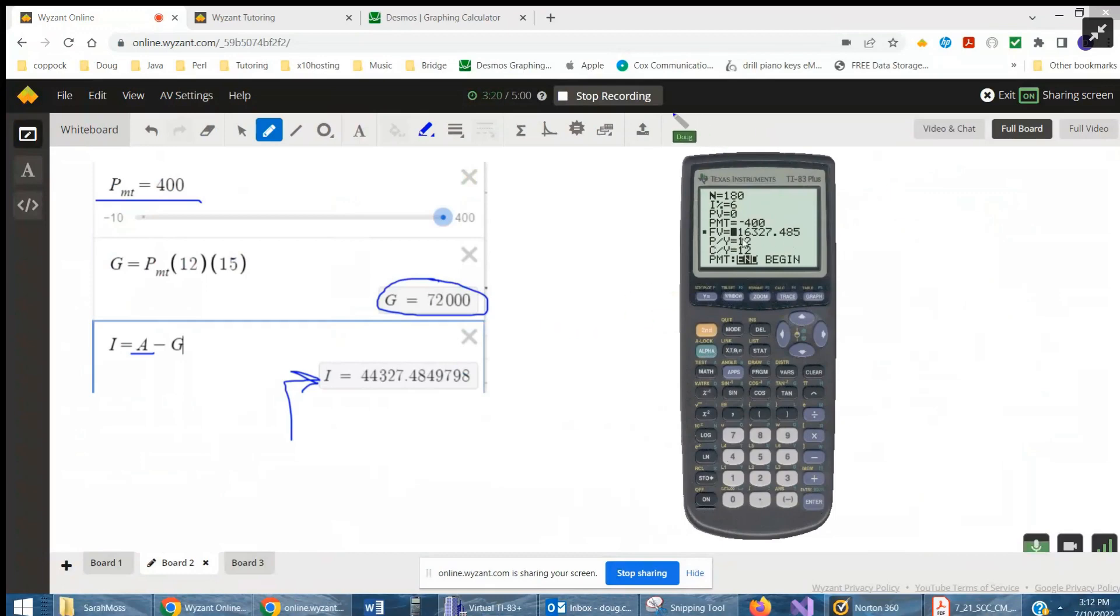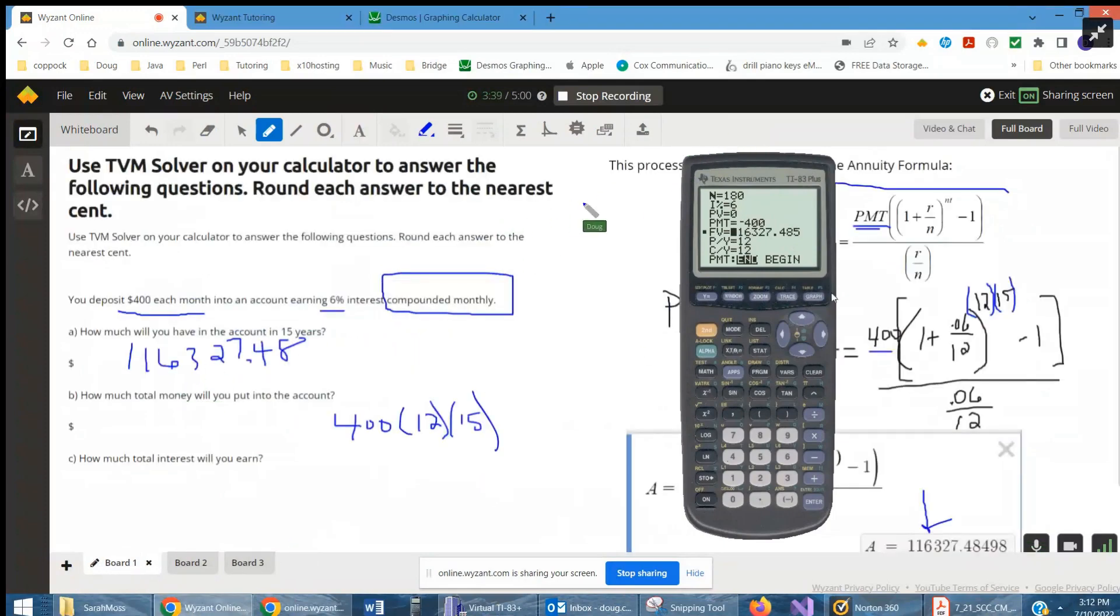You have to be positioned on the value that you want the calculator to calculate. So there you go. $116,327. And in this case, it looks like 485. You might round that up to 49, but from part one, you see that it really rounds out to 48.